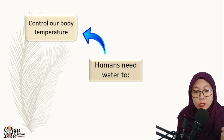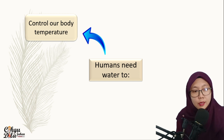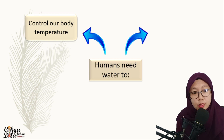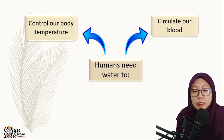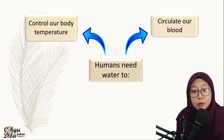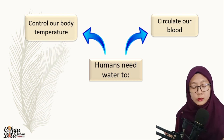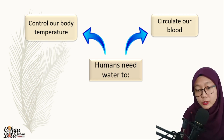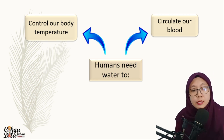Why do we need water? When we drink water, it can help us to control our body temperature. It also helps to circulate our blood, because the blood carries water to the whole body. So by drinking water, it helps to circulate our blood.